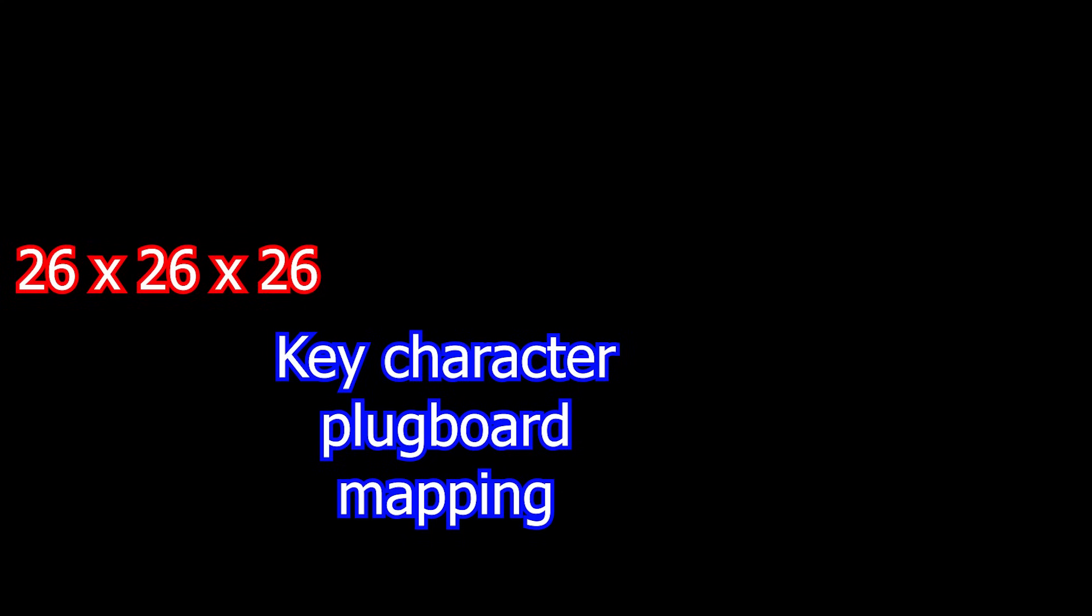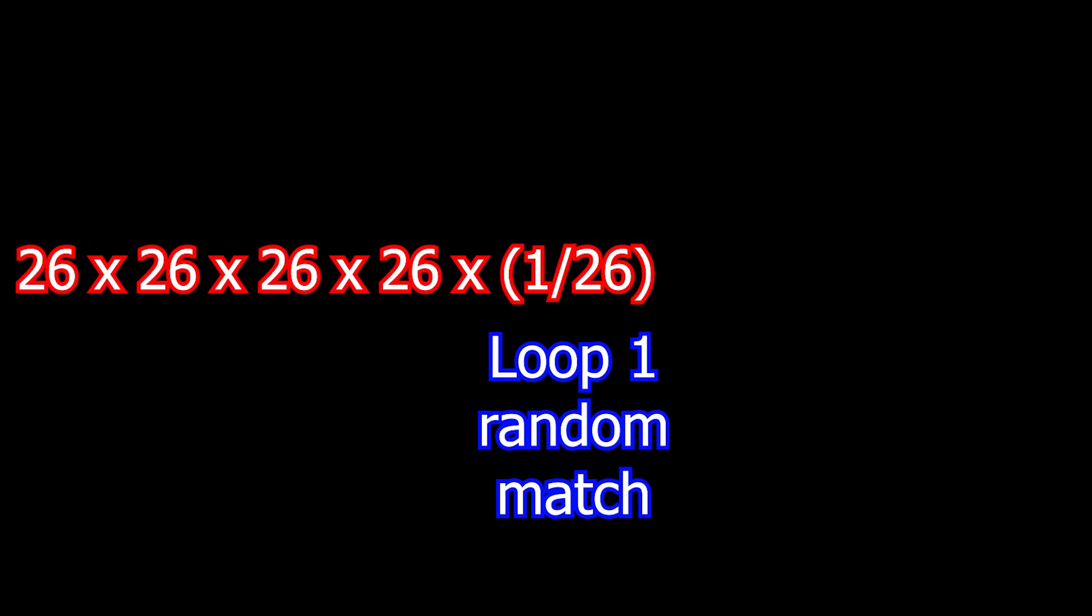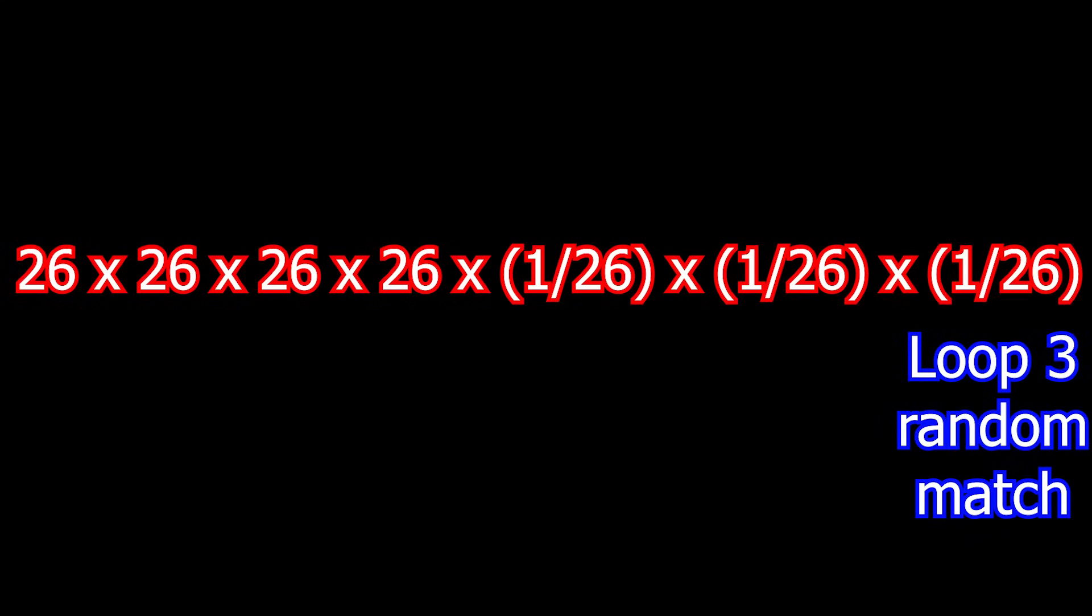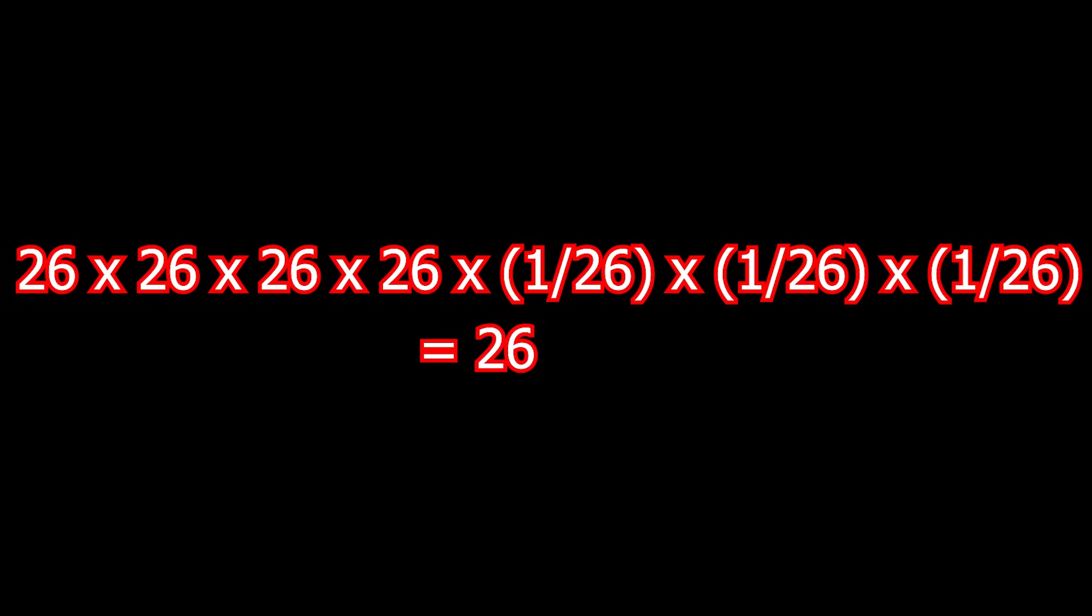We can indeed see our true solution where the rotor settings J-I-Y and E maps to E on the plugboard. Remember, we're searching through 26x26x26 possible rotor settings, and we have to search for our key letter plugboard mapping pair, which is another 26 letters. Then there's a 1 in 26 chance of a random match from our first loop, 1 in 26 chance for our second loop, times 1 in 26 chance for the third loop, leading to 26 possible random solutions and our 1 true solution.